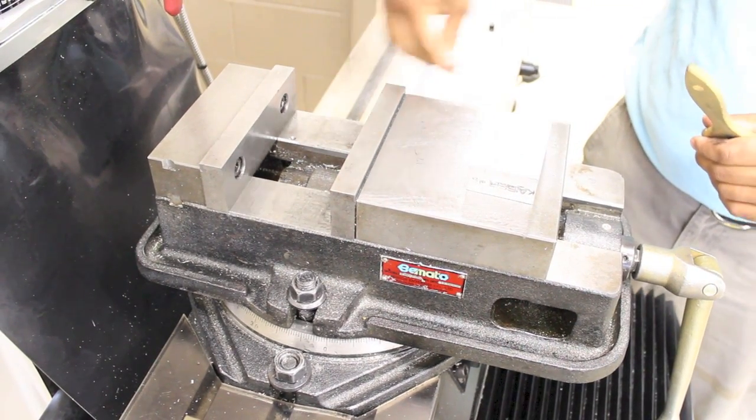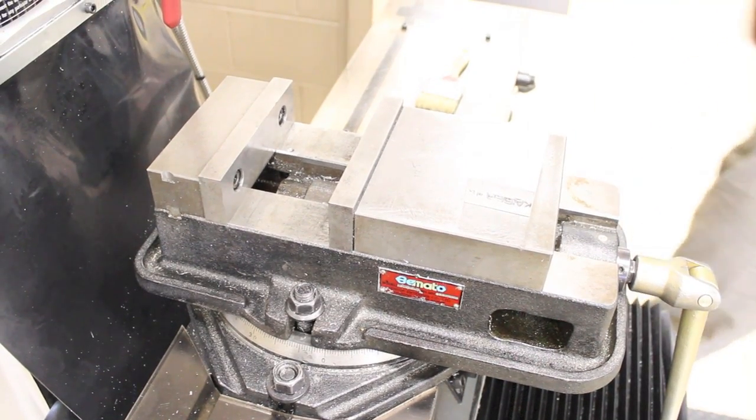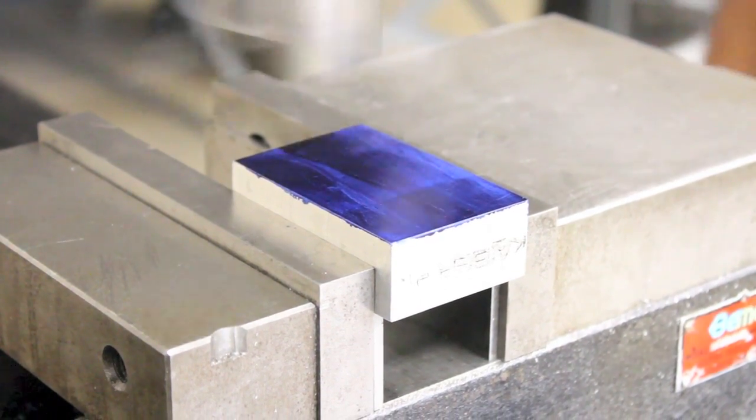Second, be sure that the vise is clean. Place the flattest part of the stock against the fixed jaw of the vise on the milling machine and clamp it into position.